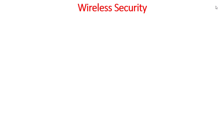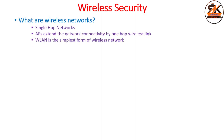In today's topic we have to study about wireless security, but before that we will briefly go through the concept of wireless networks. Wireless networks are basically single-hop networks where you have access points, and they extend the network connectivity by one hop wireless link. These access points are deployed and extend the connectivity of wireless networks by a single hop, and the example of such networks is the wireless LAN.